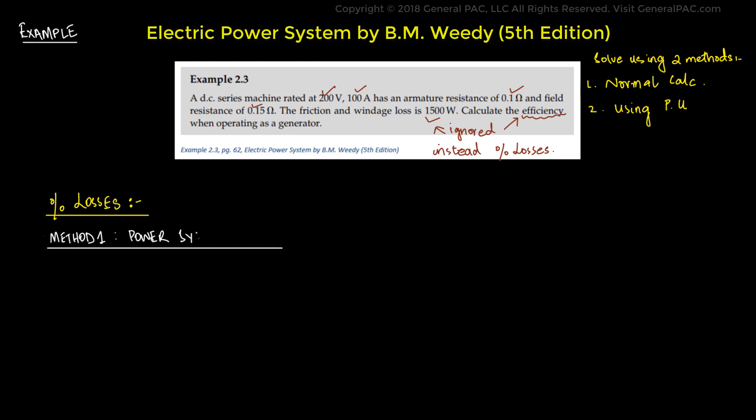Method one, the normal power system method, is that you calculate the total resistance, which is 0.1 ohms plus 0.15 ohms, equaling 0.25 ohms. We know that power out is voltage times current. The voltage is 200 volts and the current is 100 amps, which means we got a total power out of 20,000 watts, or 20 kW.